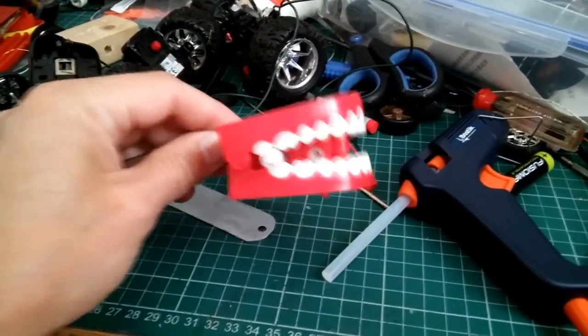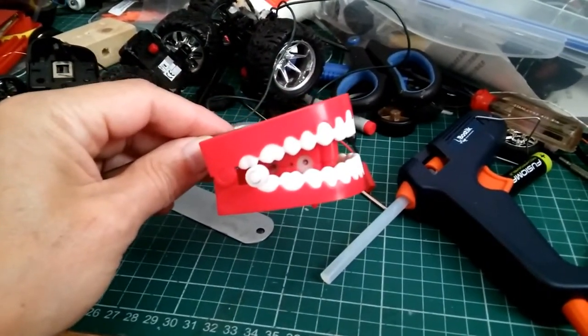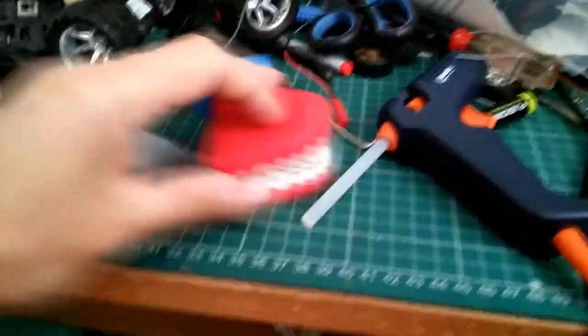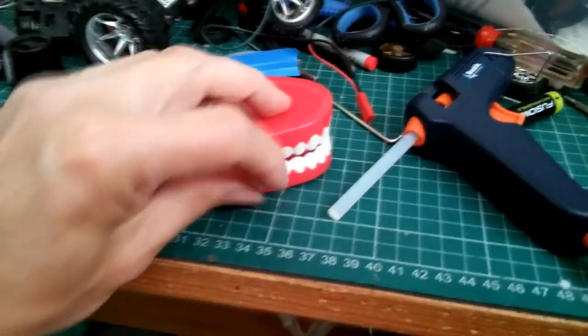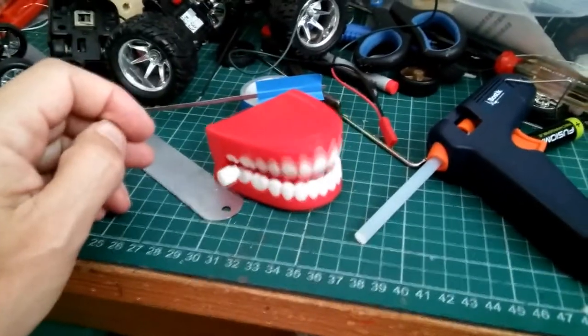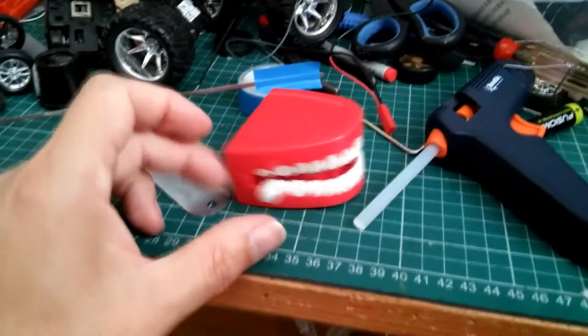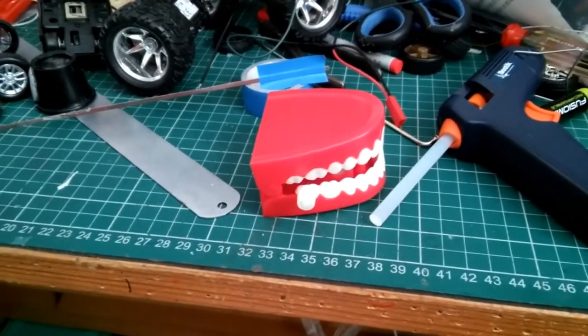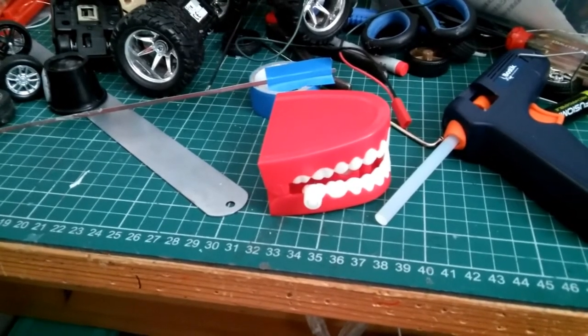A while ago I bought these chattering teeth in Wilco. Let's just take that off because I've just been trying something out. So what you do is you wind them up and they chatter. And when I bought them I had this idea of using that to power something, like a boat.